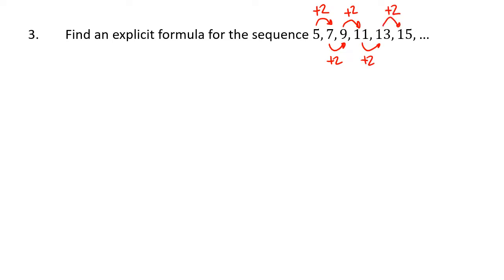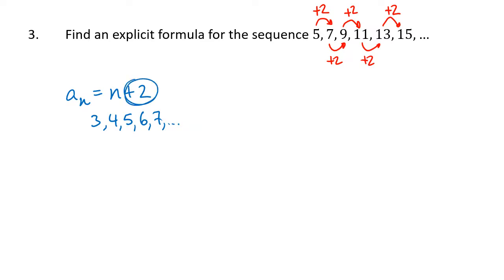Now that we've seen the pattern, what makes sense to have as our actual formula? A common thing students try is to say, 'I'm adding 2, so maybe my formula is n plus 2.' So does that work? When n is 1, we get 3. When n is 2, we get 4. Then 5, 6, 7, and so on. This is wrong for a few reasons. Obviously we didn't get the right numbers, but also the plus 2 isn't achieving the pattern of numbers going up by 2 each time — it's just taking where we are in the sequence and adding 2 to that.